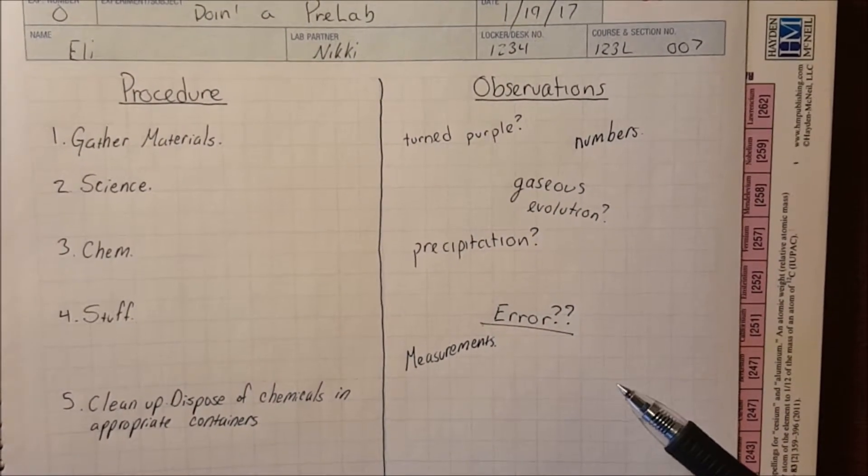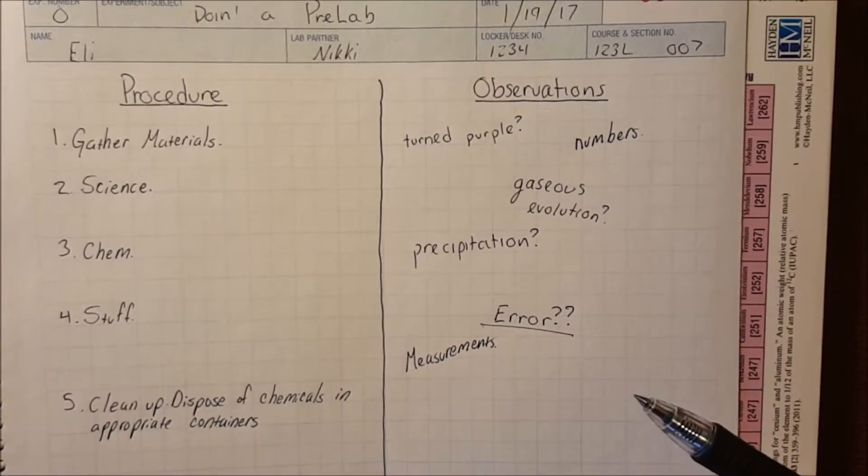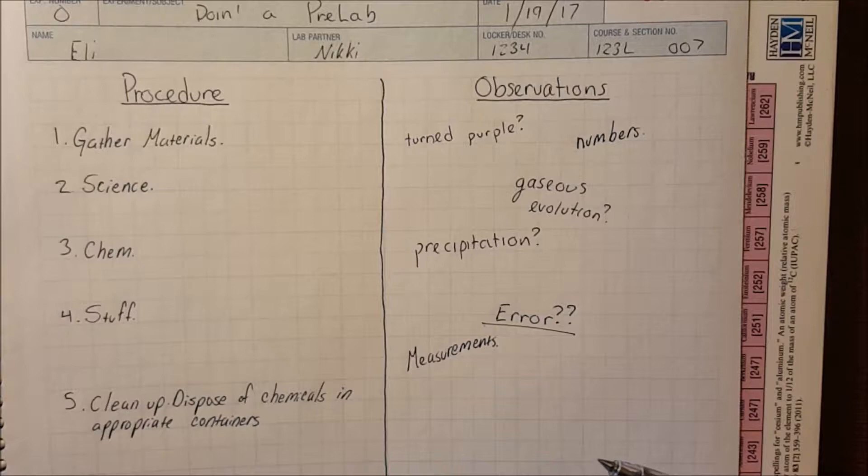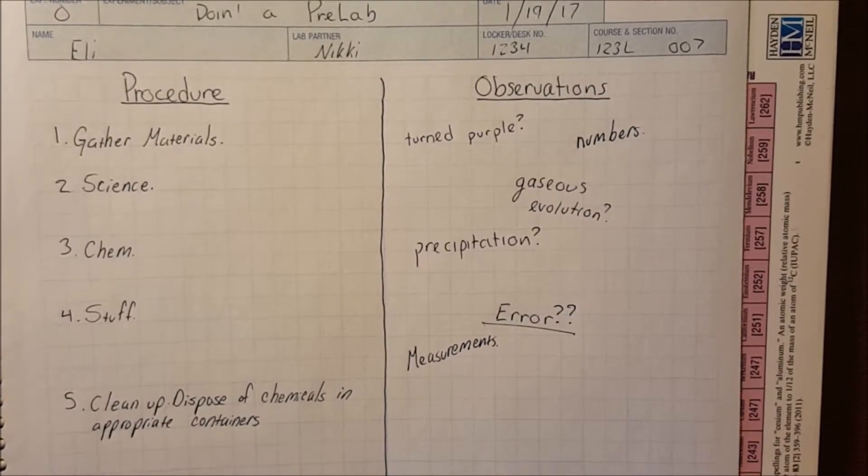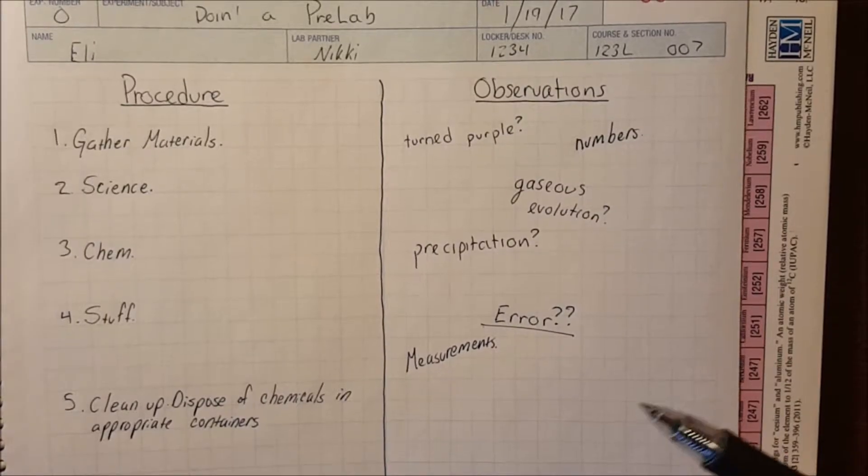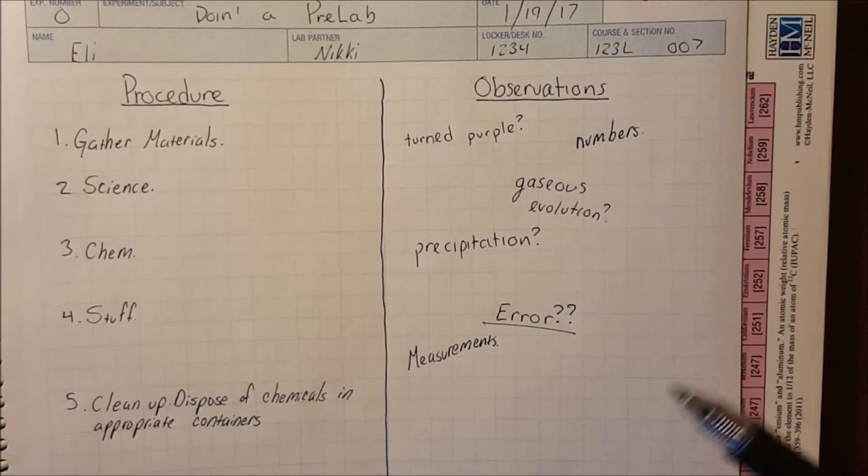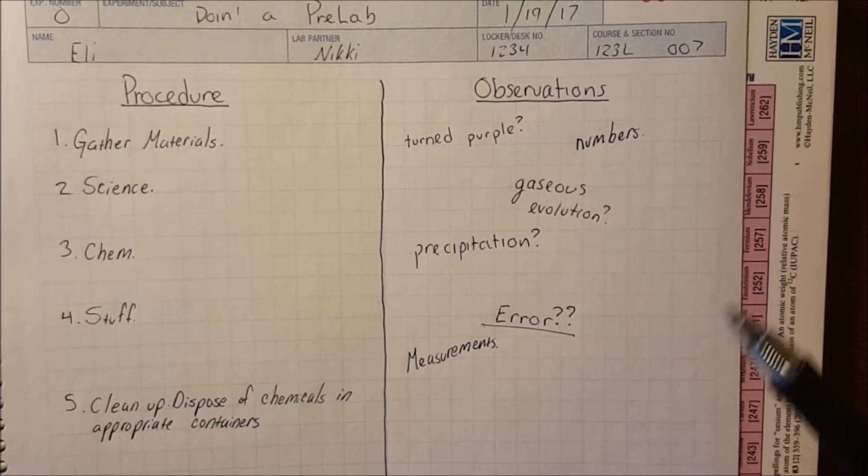On the right side you have your observations. This is where you'll write down any important numbers such as measurements or anything you notice about your experiment, such as a color change, gas bubbles, a temperature change, etc. You may also want to note any potential errors. Like if you spilled something, make sure you note it just so that you can write about it later in your post lab.